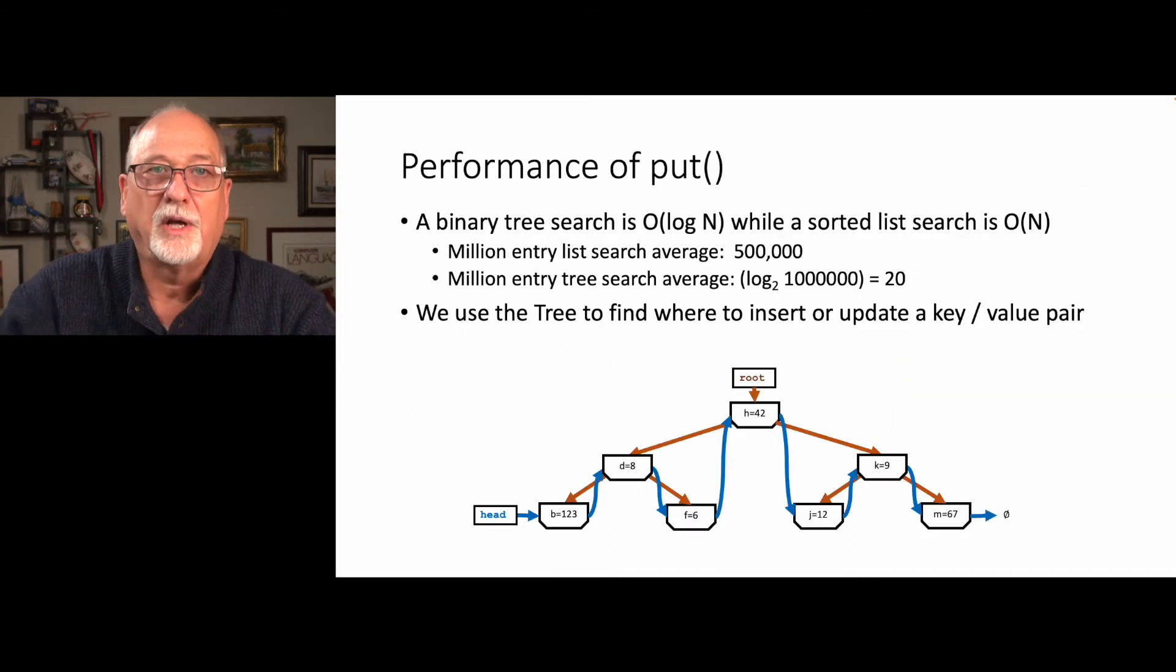If we take a quick look at the performance of put, the binary search is log n while a sorted list search is order n, meaning a list of 500,000 or a million takes on average 500,000 lookups to find it, whereas a million entry tree search takes log 2 of a million, about 20. We're going to use the tree anytime we're searching and only use the list when we're iterating, but while we're doing put, we've got to maintain both the tree and the list.